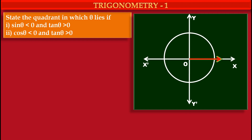Now, this red colored ray is our terminal arm, starting from origin O. If this arm coincides with our initial arm, that means the angle is 0. If this terminal arm is along the positive direction of the y-axis from O, that means O-Y, then the angle is 90 degrees. So for angle 0 degrees, the terminal arm is on the positive x-axis, and for 90 degrees, the terminal arm is on the positive y-axis.